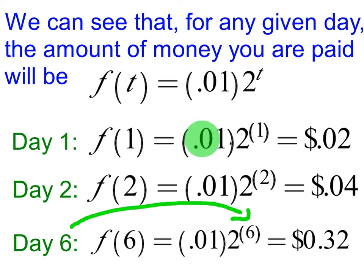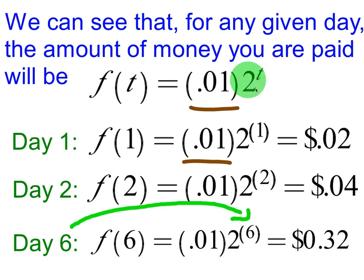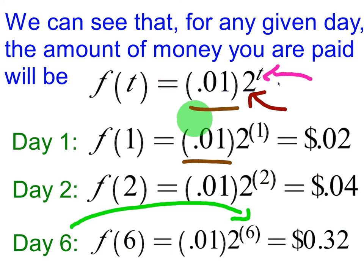To make sense of this equation, let's use some examples. The 0.01 represents the penny you originally had in your pocket. The 2 represents how much you will be multiplying that penny by every day — in this case, we are doubling, therefore the base is 2. The third part of this formula is how many days elapse.